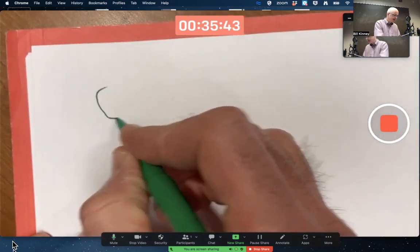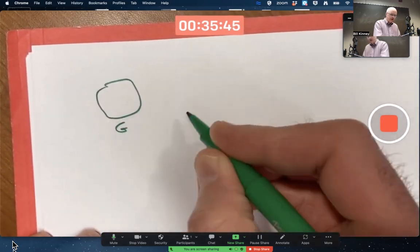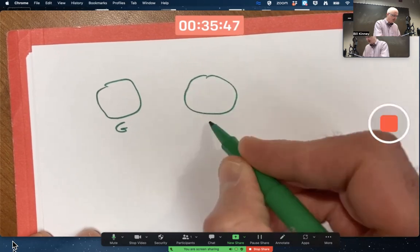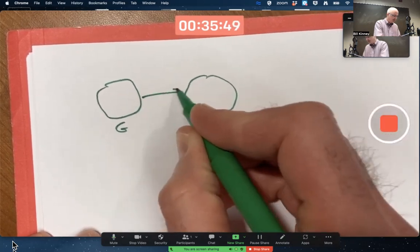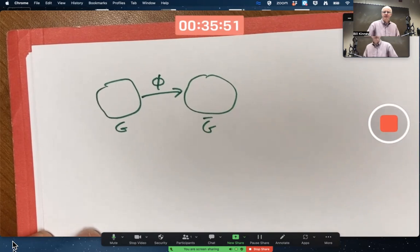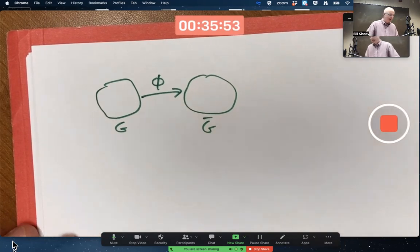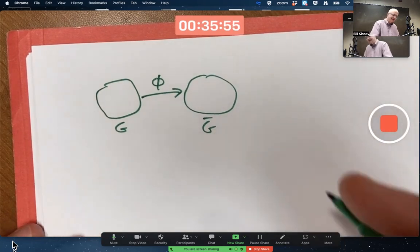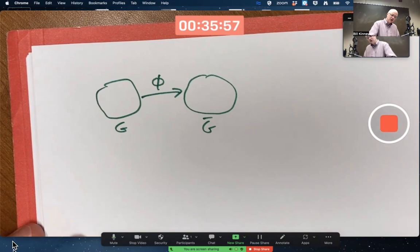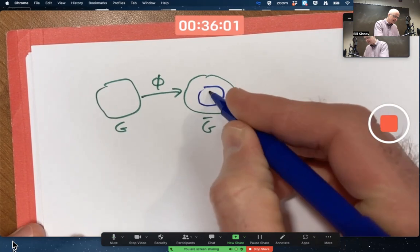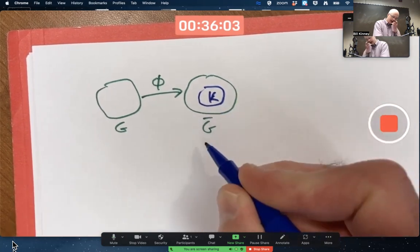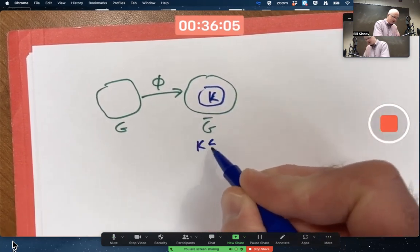If you've got an isomorphism from a group G to another group G-bar, φ is an isomorphism from G to G-bar, and you've got a subgroup K, not of G, but of G-bar. So K is a subgroup of G-bar.